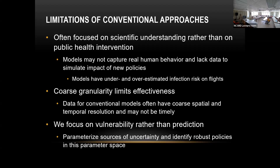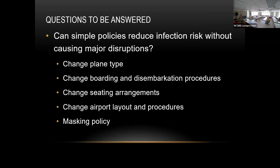We parameterize sources of uncertainty, do a parameter sweep, and identify robust policies in the parameter space — policies that always give you low infection risk. We'll answer questions like: can simple policies reduce infection risk without causing major disruption?